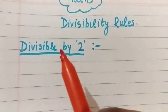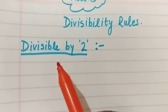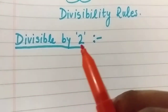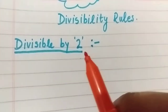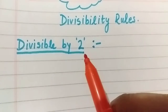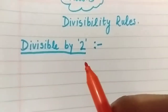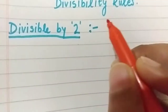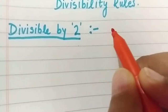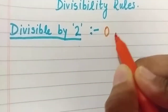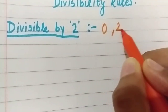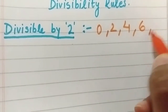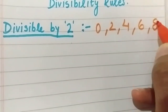First is divisibility by 2. How can we tell if any number is divisible by 2 or not — meaning if it comes in the 2 times table or not? If the last digit of that number is 0, 2, 4, 6, or 8, then the number is divisible by 2.